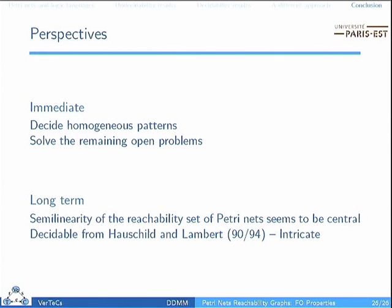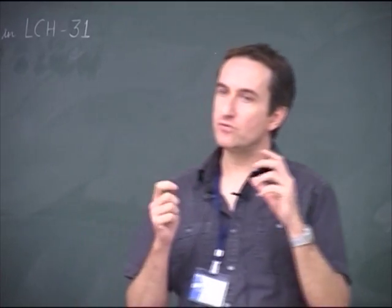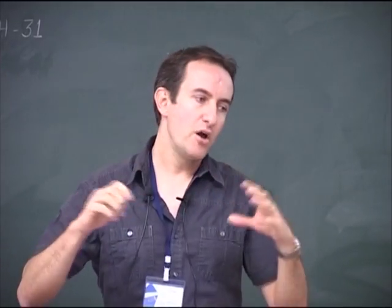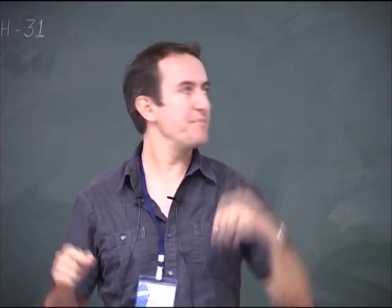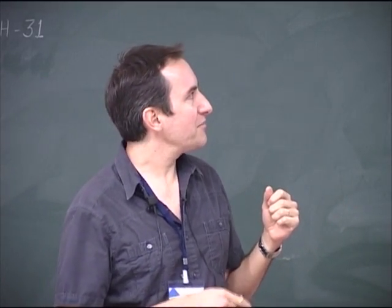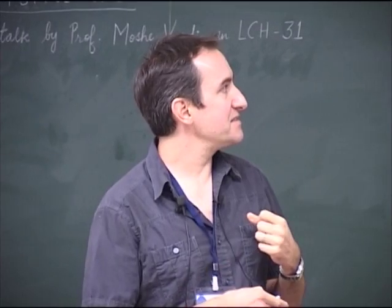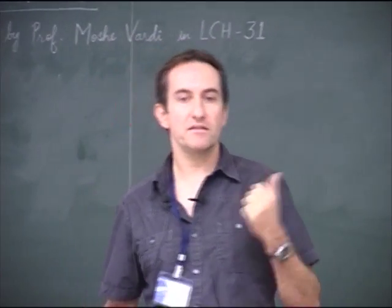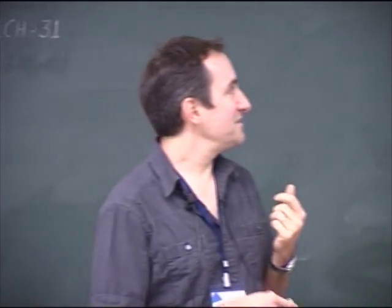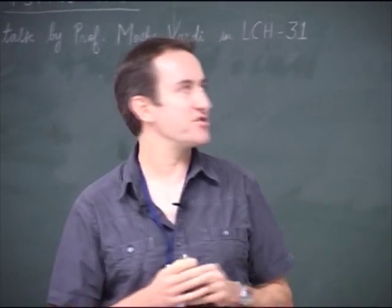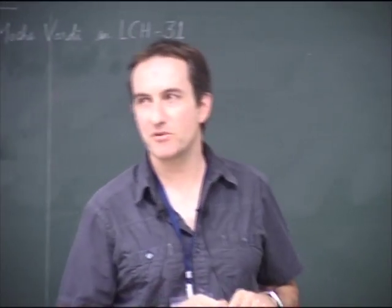What we would like to do is, of course, try to solve the open problems. We would also like to decide the case of homogeneous patterns — for example, finding adjacent reachable markings. On the long term, there is a connection to semi-linearity: the problem of semi-linearity for a PetriNet is very important, and it is decidable from results of Hauschild and Lambert from 1990 and 1994, but this decidability is very intricate. It would be very interesting to have a more geometrical characterization. Thank you very much for your attention.